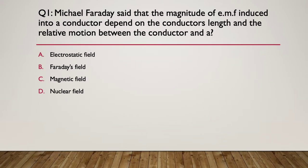Question one. Michael Faraday said that the magnitude of an EMF — that's an electromagnetic force — induced into a conductor depends on the conductor's length and the relative motion between the conductor and what? A: an electrostatic field, B: a Faraday's field, C: a magnetic field, or D: a nuclear field. Pause here.